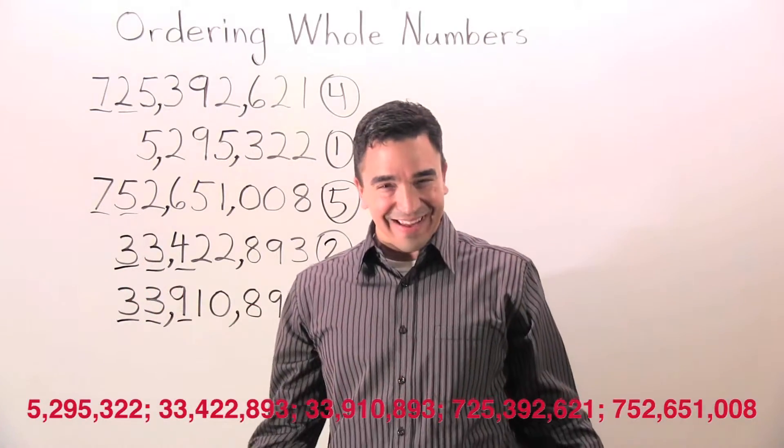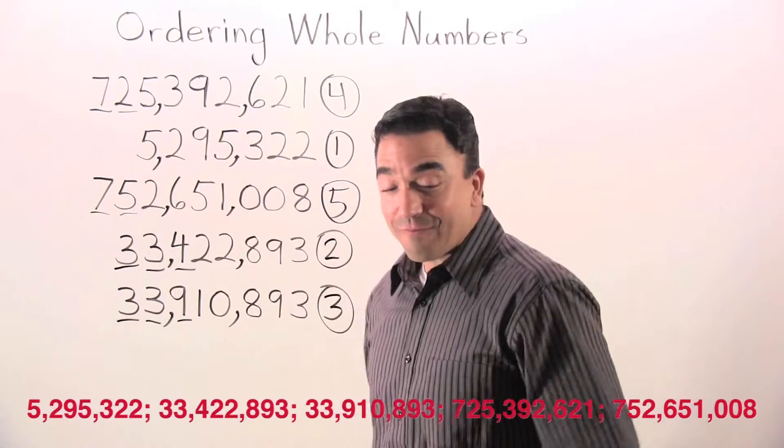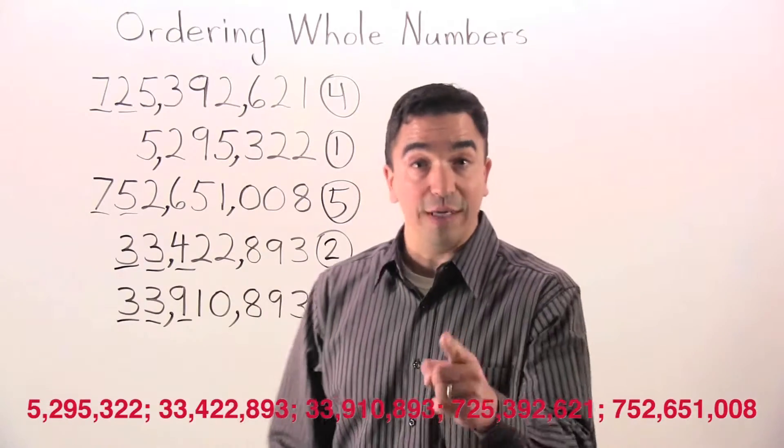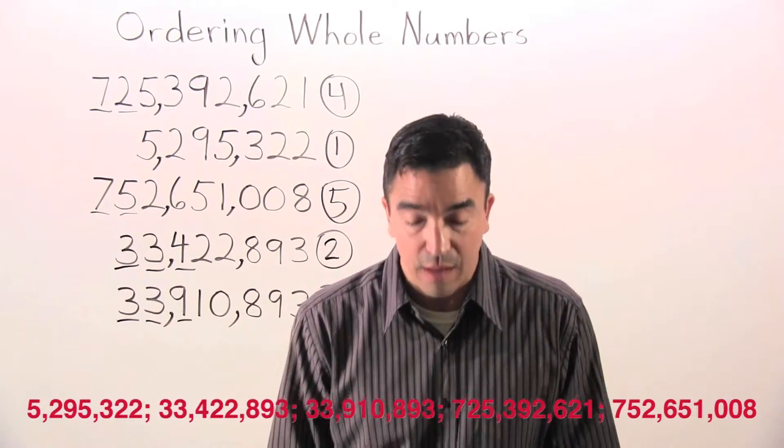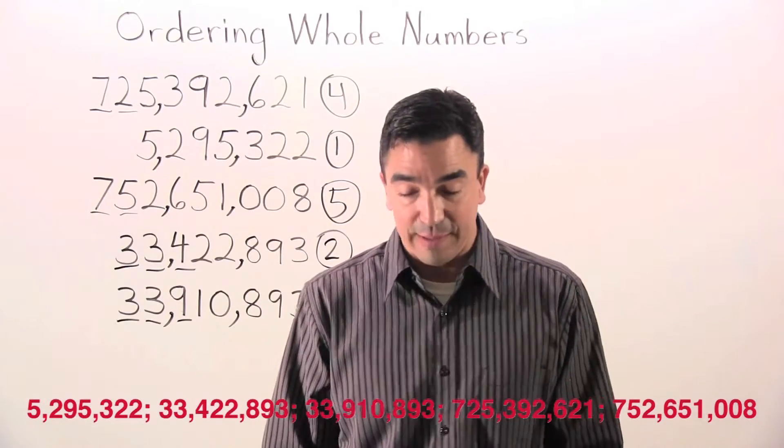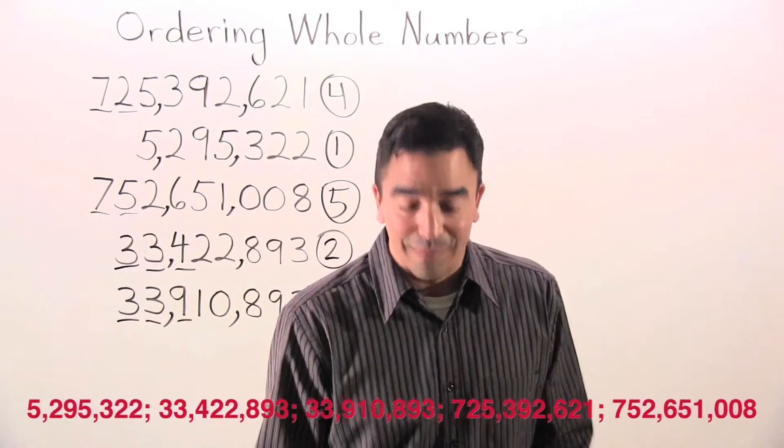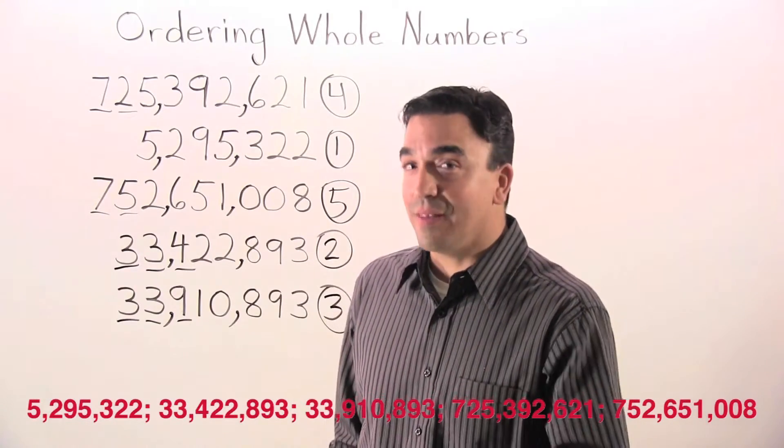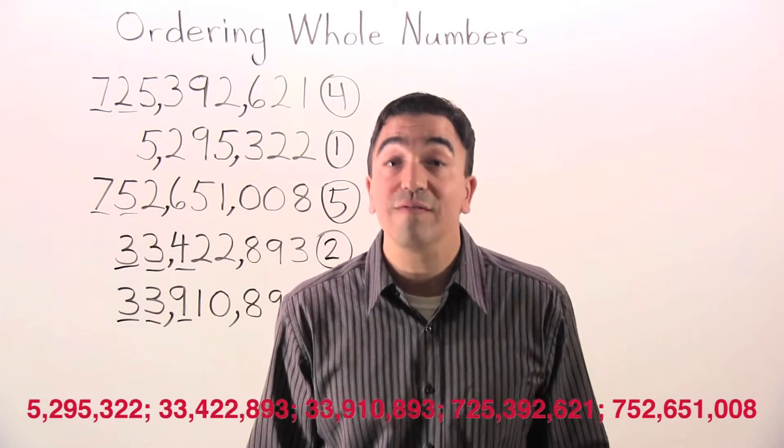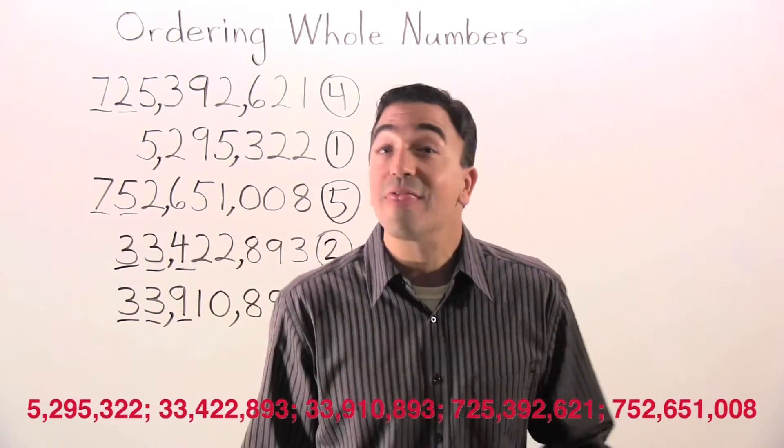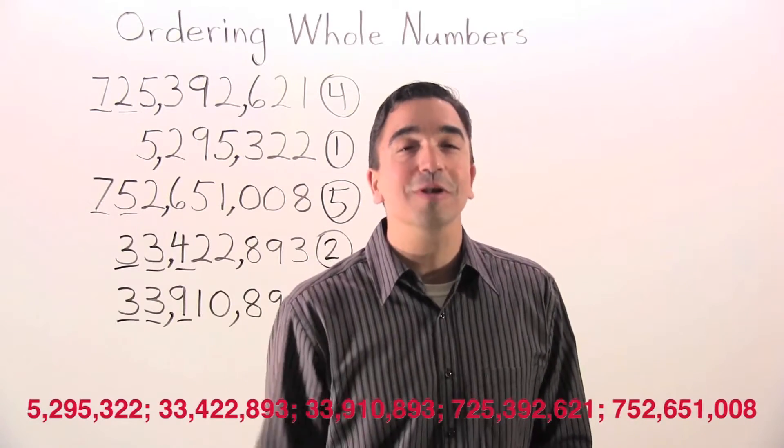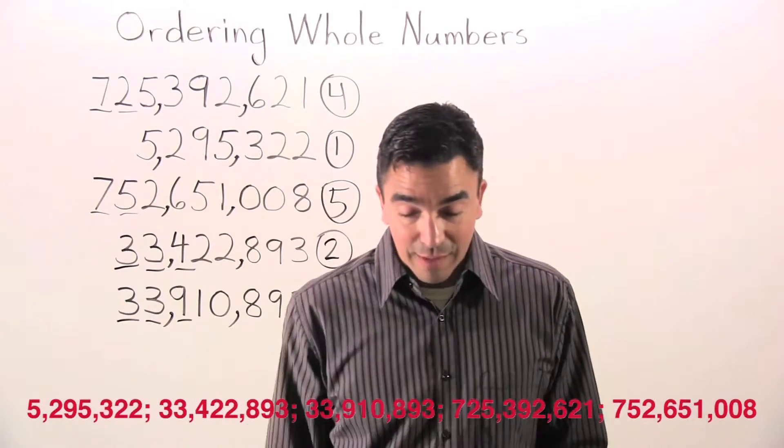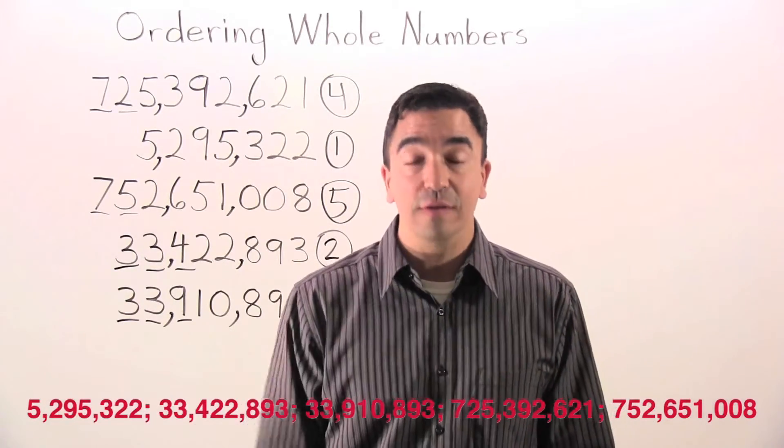Look at that! All right. We have five million, two hundred ninety-five thousand, three hundred twenty-two. We have thirty-three million, four hundred twenty-two thousand, eight hundred ninety-three. We have thirty-three million, nine hundred ten thousand, eight hundred ninety-three. We have seven hundred twenty-five million, three hundred ninety-two thousand, six hundred twenty-one. And last but not least, seven hundred fifty-two million, six hundred fifty-one thousand, eight.